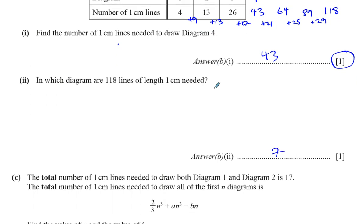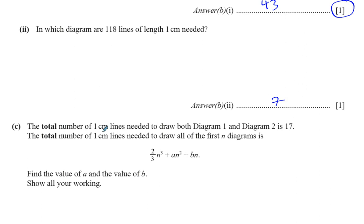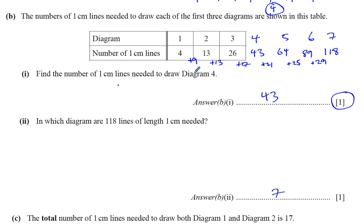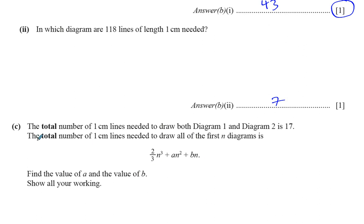Now part C. The total number of one centimeter lines needed to draw both diagrams one and two is seventeen — you can see that from the table. This formula tells us the total number of one centimeter lines needed to draw all of the first n diagrams. So if I wanted to find the total lines for the first five diagrams, I would put n equals five into this formula. We need to find the values of a and b.